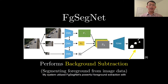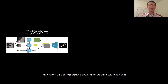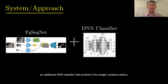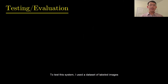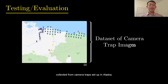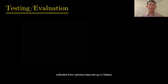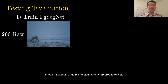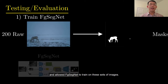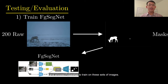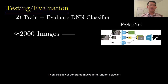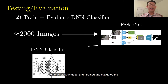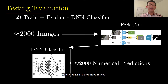My system utilized FG-Segnet's powerful foreground extraction with an additional DNN classifier that predicts if the image contains caribou. To test this system, I used a labeled dataset of images collected from camera traps set up in Alaska. First, I masked 200 images labeled to have foreground objects and allowed FG-Segnet to train on these sets of images. Then, FG-Segnet generated masks for a random selection of about 2000 images and trained and evaluated the additional DNN using these masks.